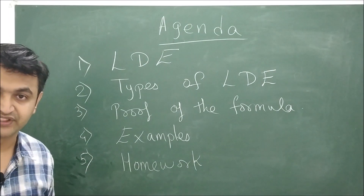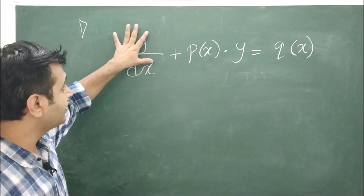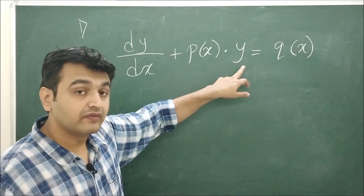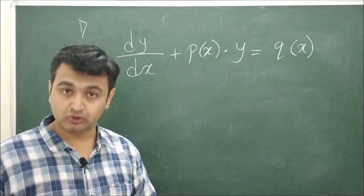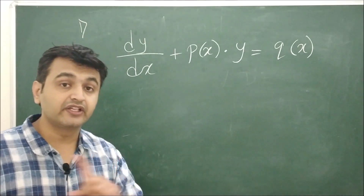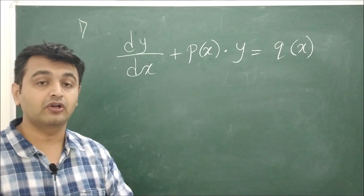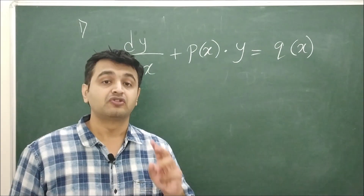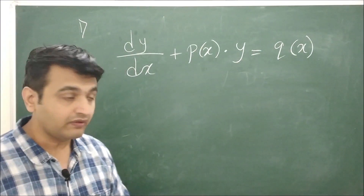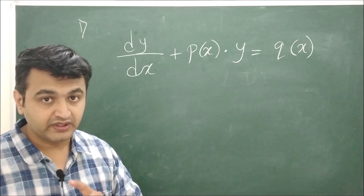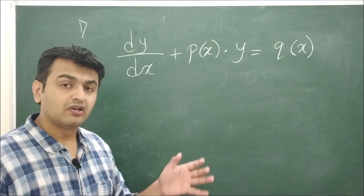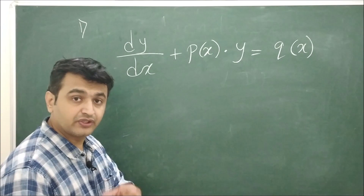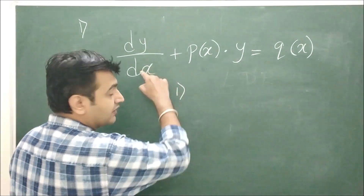A linear differential equation requires three conditions: the degree of dy/dx must be one, the degree of the dependent variable must also be one, and there should not be any product of the dependent variable and its derivative. These three conditions must be satisfied to call a differential equation a linear differential equation.